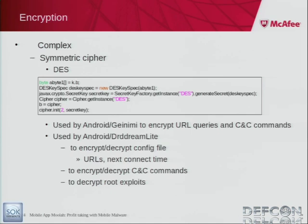Droid Dream Lite was a modified smaller version of Droid Dream that also used standard encryption - I believe DES or AES - to hide a couple of root exploits that were used in Droid Dream. The same identical exploits, just encrypted and hidden before it adopted disk.